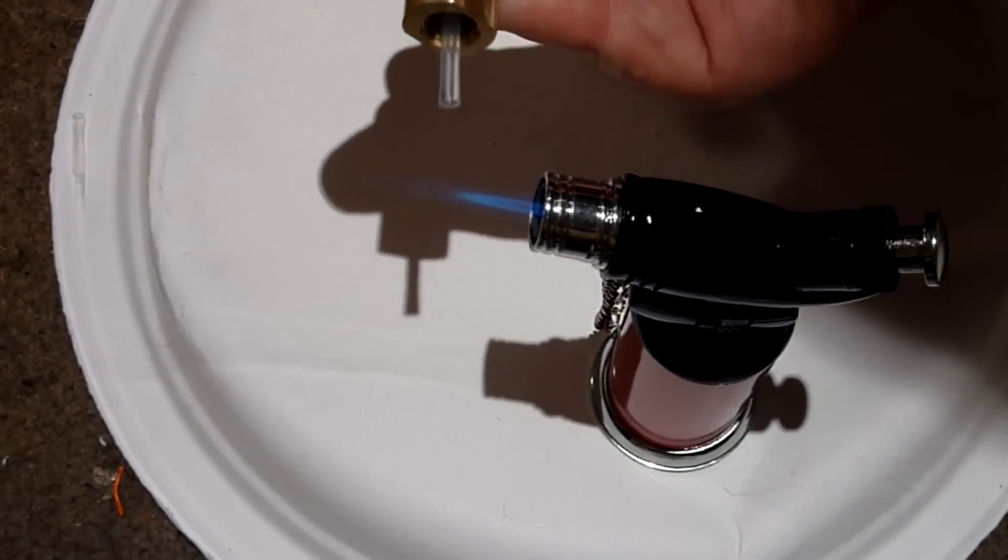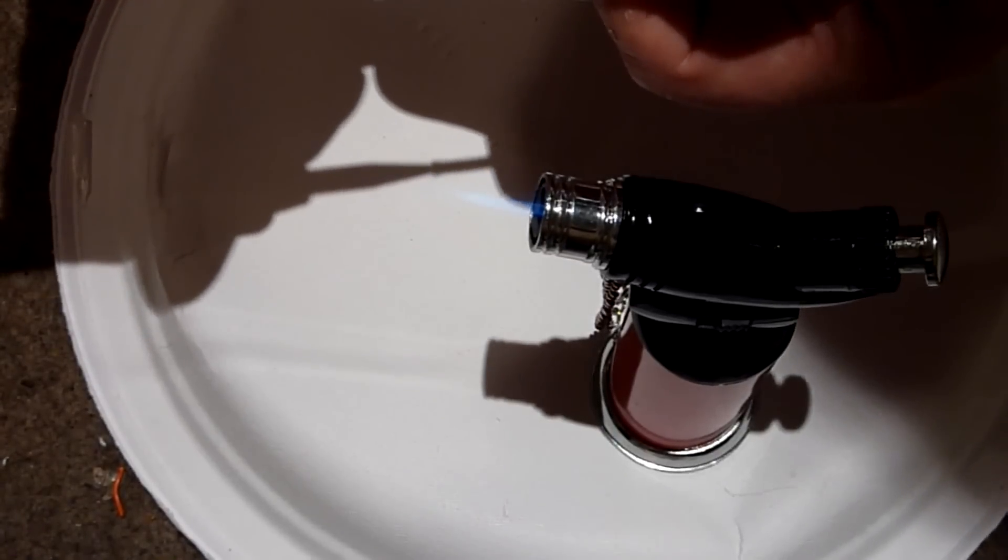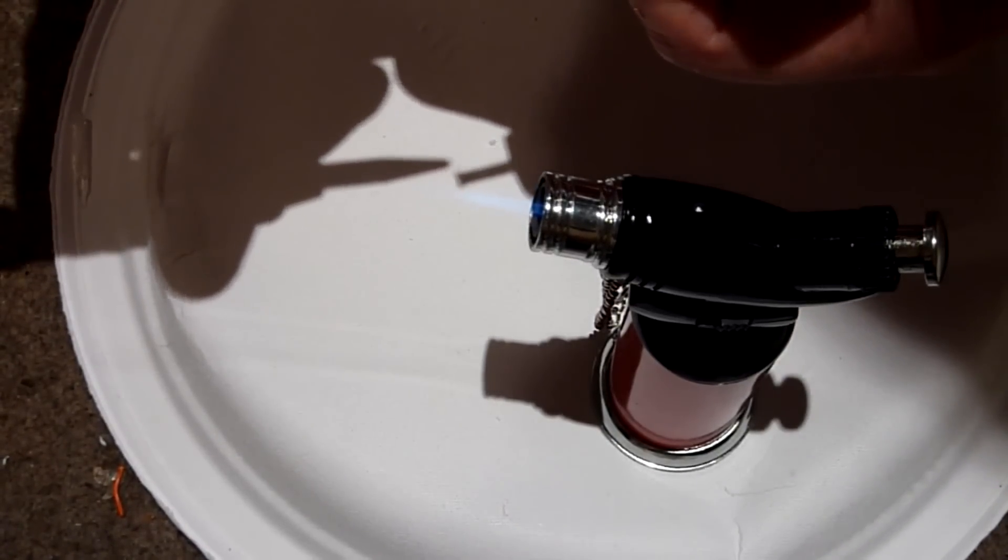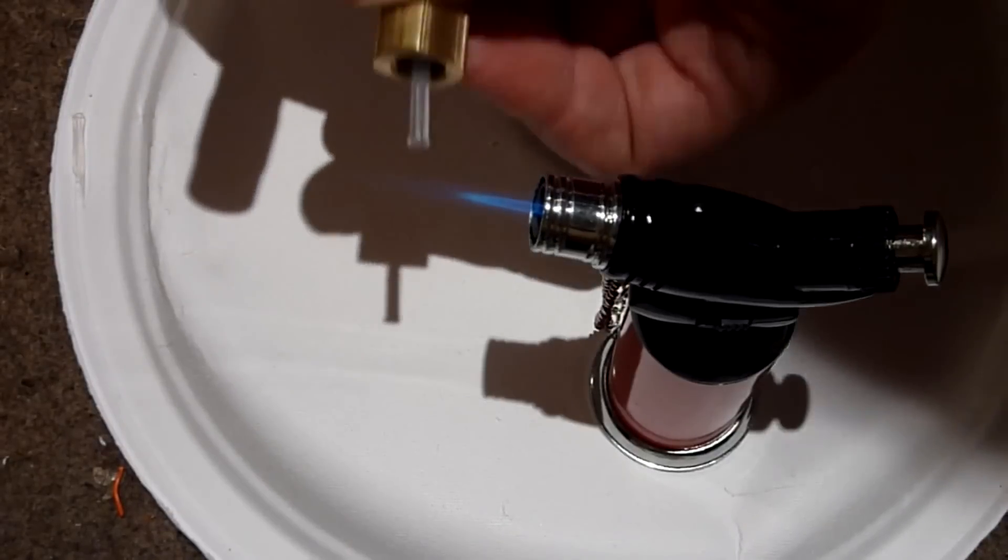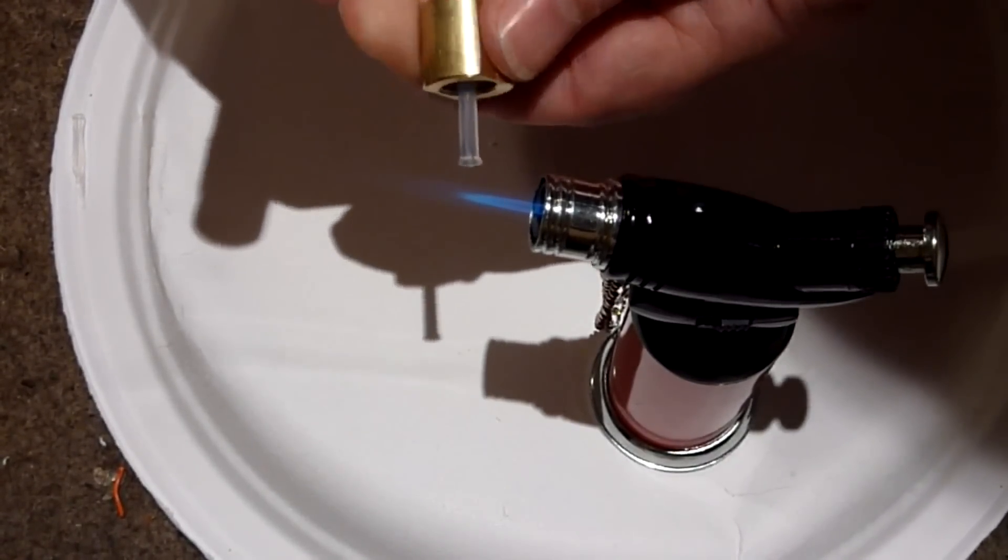When it gets to this point, press the end against a cone-shaped device. In this case, I'm using a center punch to force a flare. It may need one or more attempts to get the flare correct. The tubing does not mind being reheated.